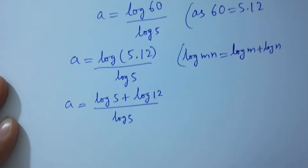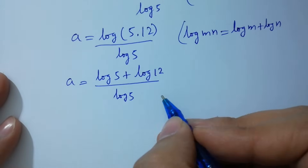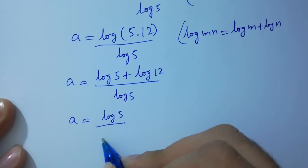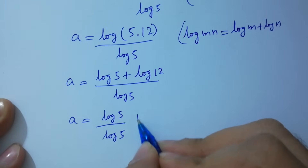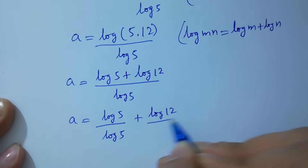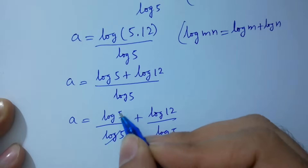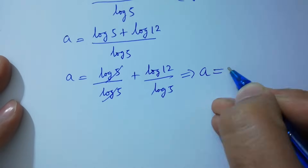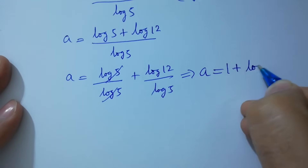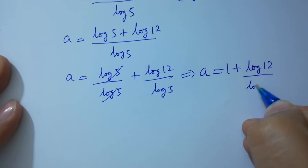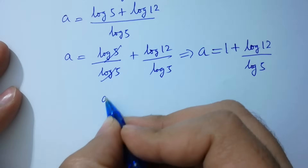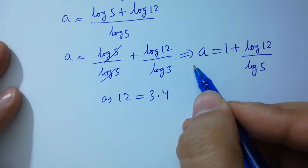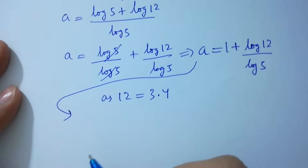Splitting the fraction: log 5 over log 5 plus log 12 over log 5. Log 5 and log 5 cancel, giving a equal to 1 plus log 12 over log 5.